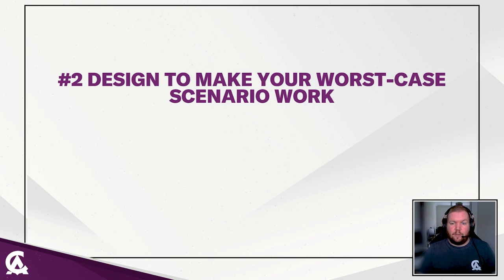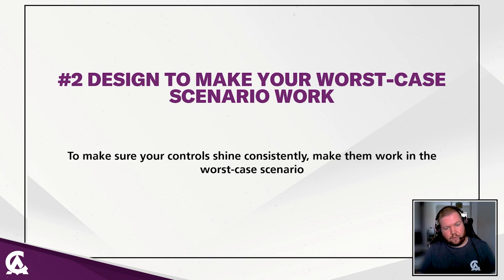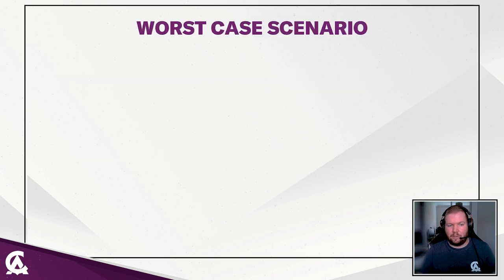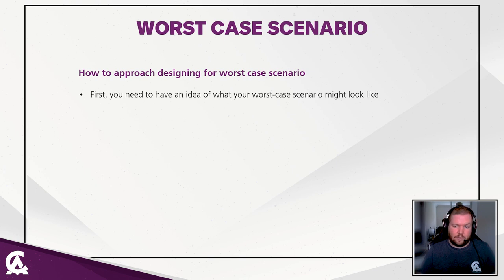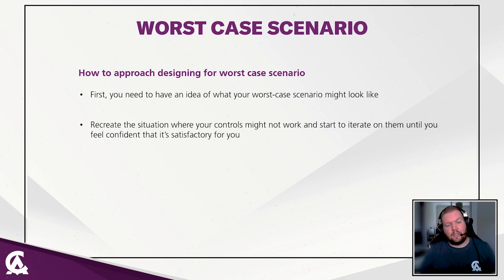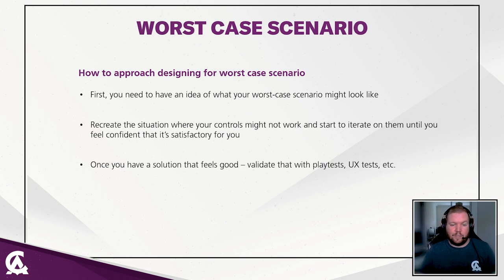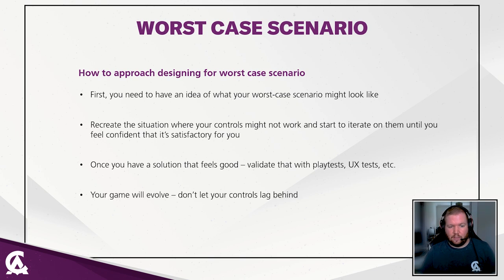Point number two: design to make your worst case scenario work. To make sure your controls shine consistently, make them work in your worst case scenario. First, understand what your worst case scenario looks like. Then recreate a situation where your controls might not work and iterate until you're confident it's satisfactory. Once you have a solution that feels good, validate it with playtests and UX tests. And don't let your controls lag behind — if your game goes through significant iterations, your controls need to adapt and be brought up to speed.